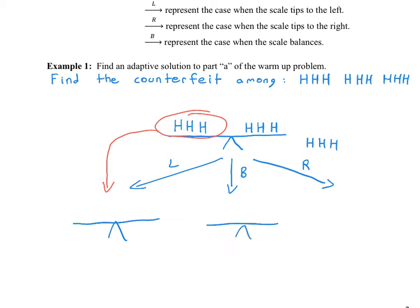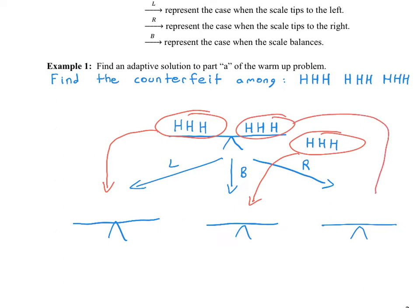If it tips to the left, those three coins on the left are in question. If it balances, the coins left off the scale are in question. If it tips to the right, the coins on the right-hand side are in question. In each of these cases, we want to find the counterfeit among three coins that could be too heavy. If you divide them evenly again, however the scale responds — left means the left coin is heavy, right means the right, and balance means the one off the scale is too heavy — and that solves our problem.